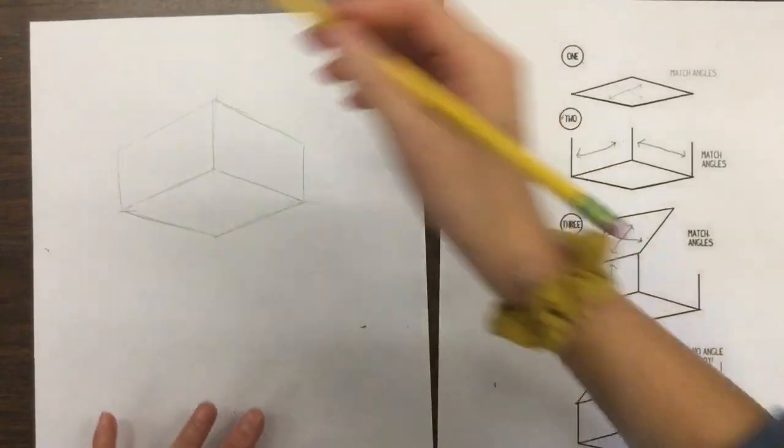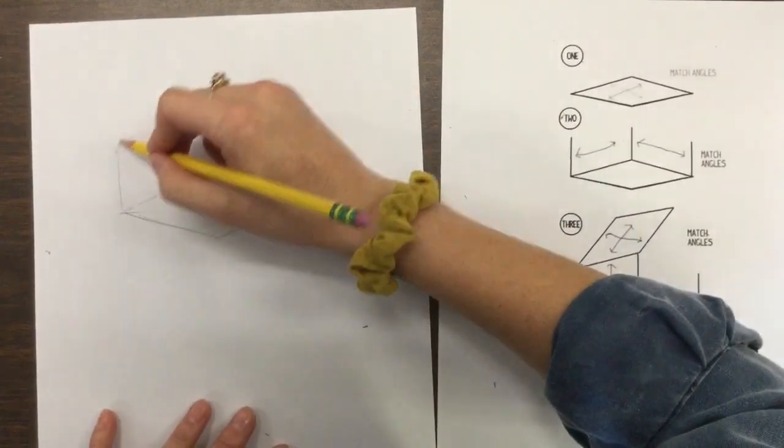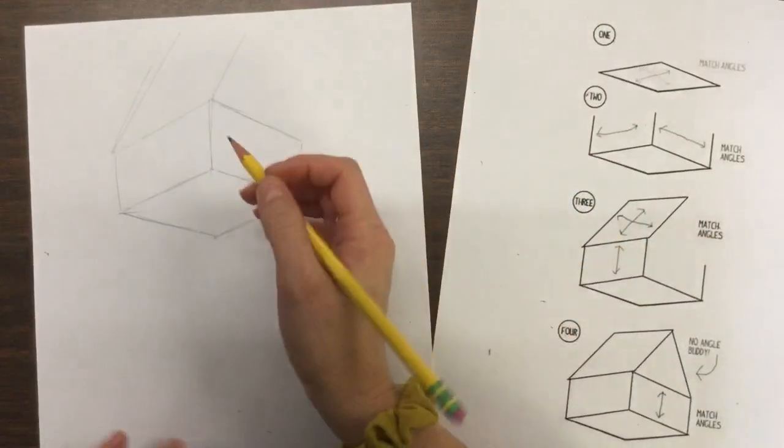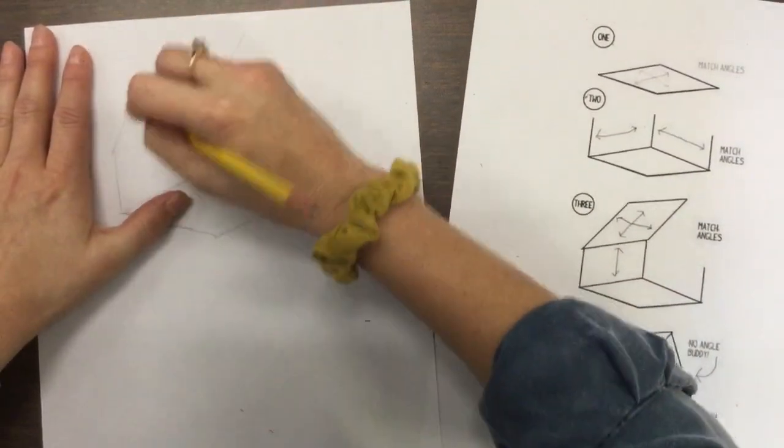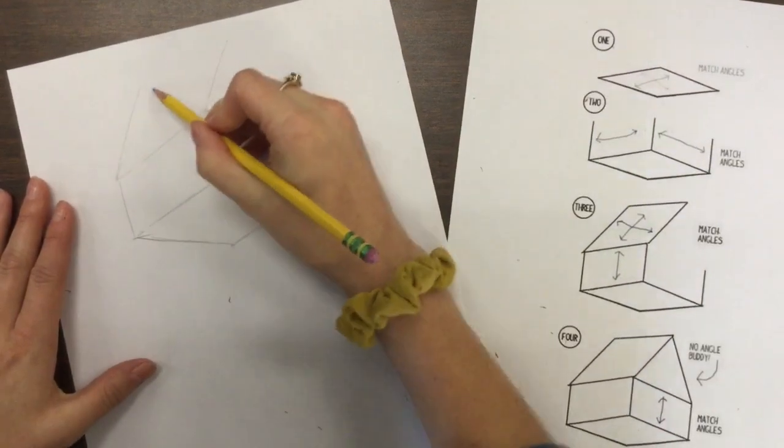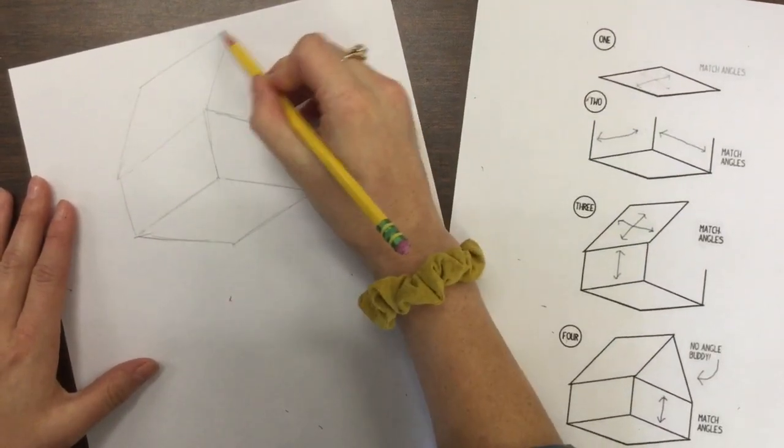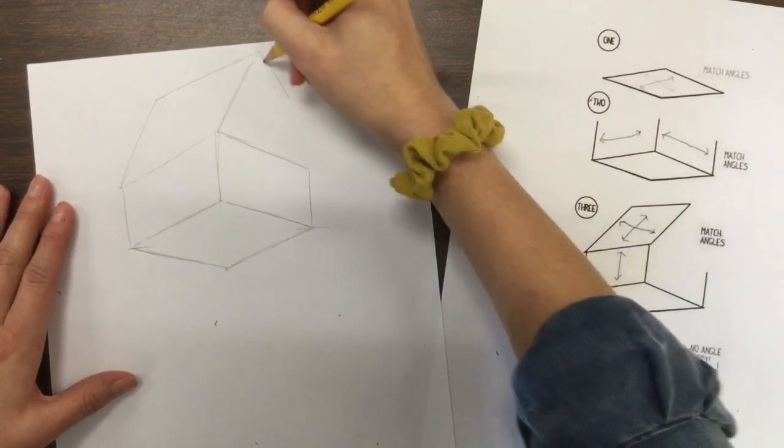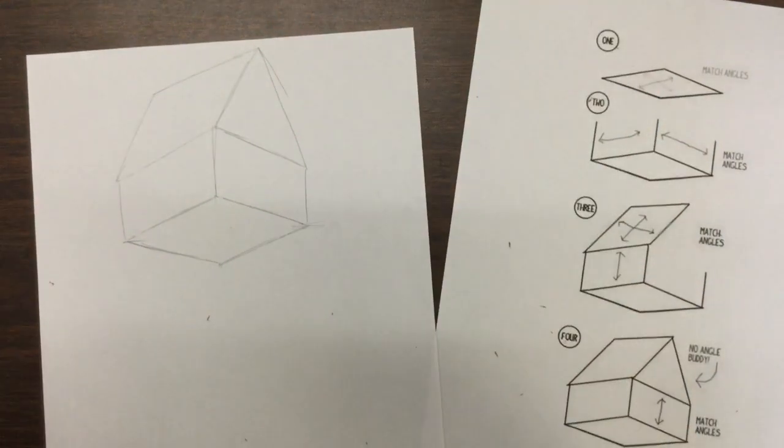Then I'm going to create the roof. With two long angles. And then connecting those two. And then my last one. All the way down. Okay.